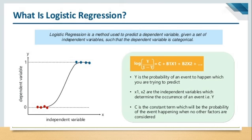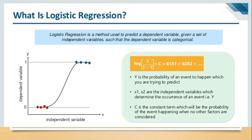The y value gives you the probability of the event. x1, x2 are the independent variables that determine the occurrence of an event. C is the constant term — the probability of the event when no other factors are considered. If y equals 0.5 as the threshold, values from 0 to 0.5 are classified as 0, and values from 0.5 to 1 fall into category 1. So the output will be 0 or 1 only, and y is called the threshold value. The value of y will be between 0 and 1 because y is a probability.